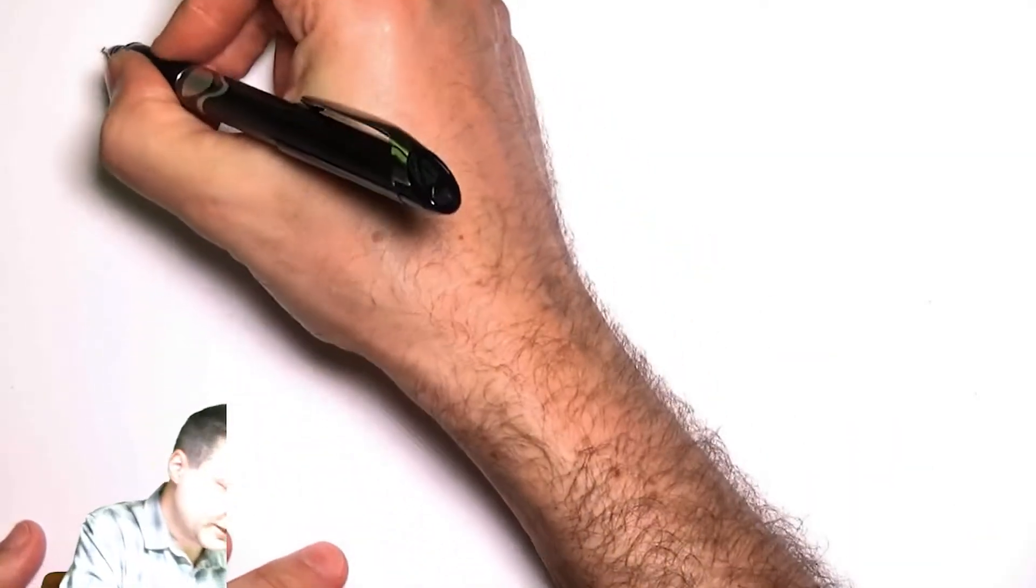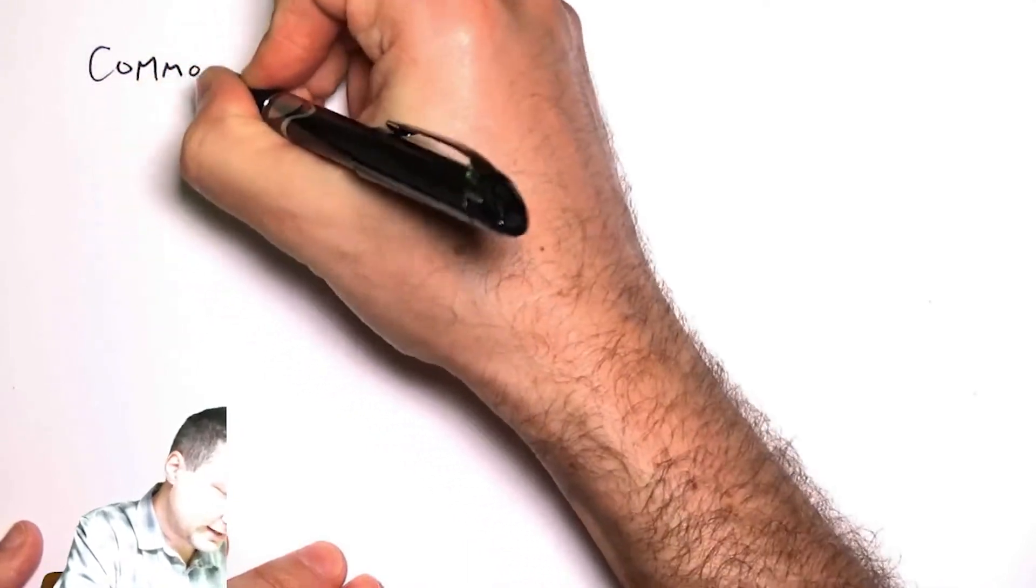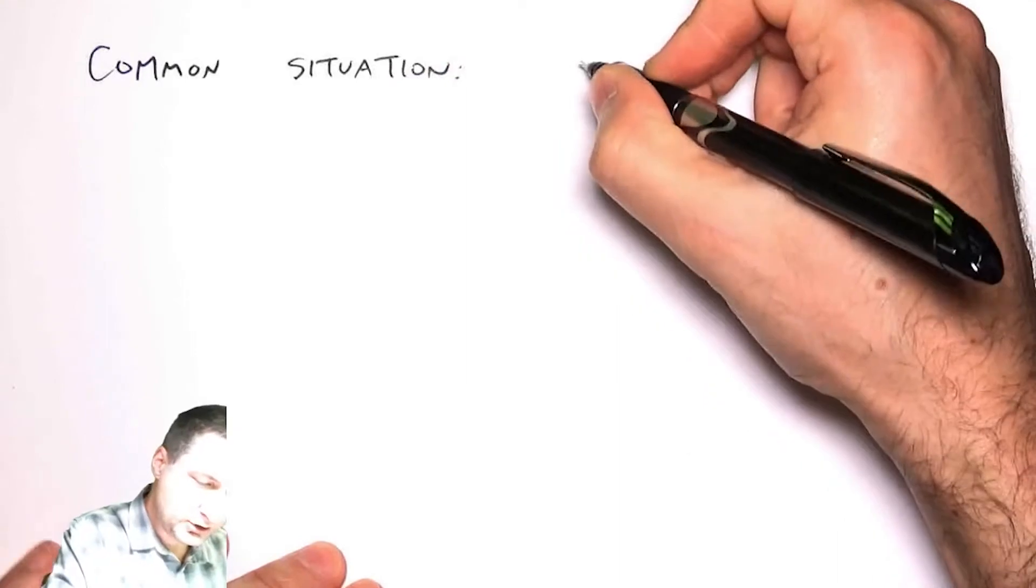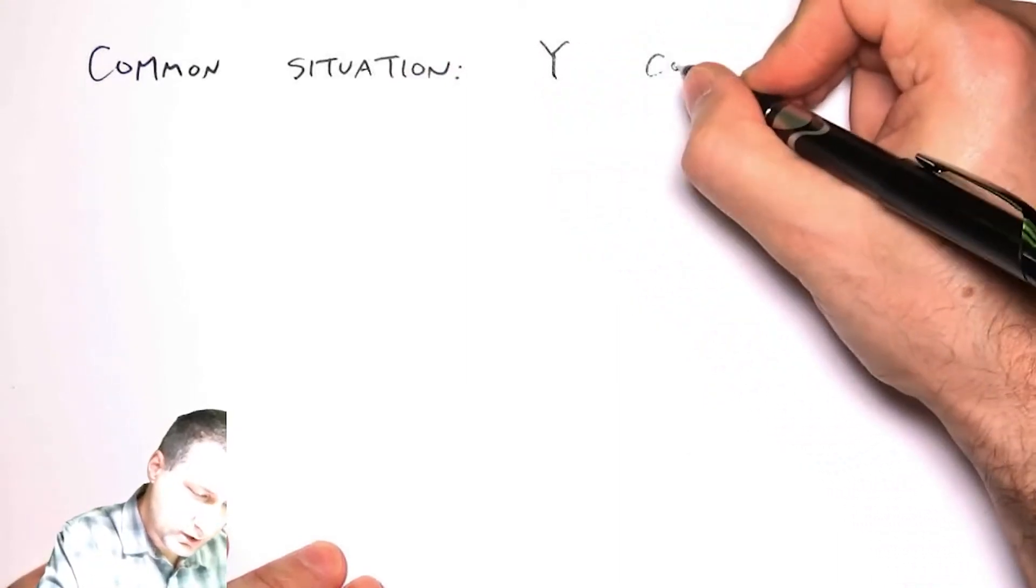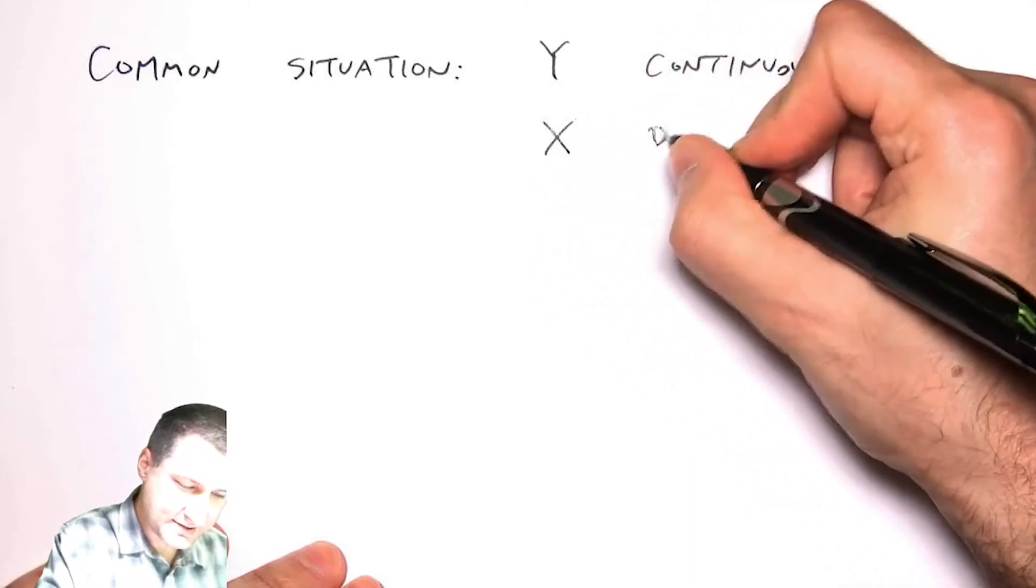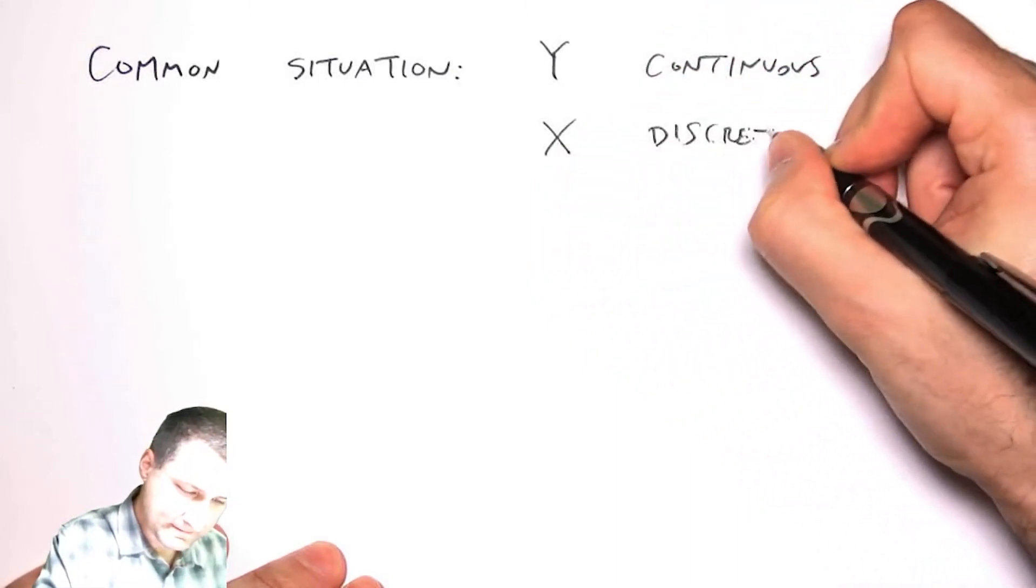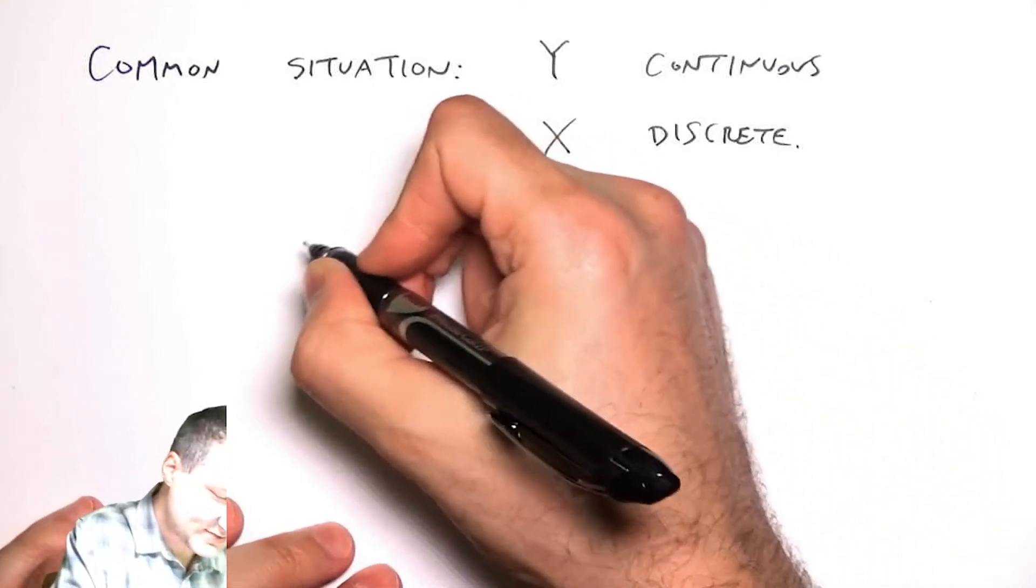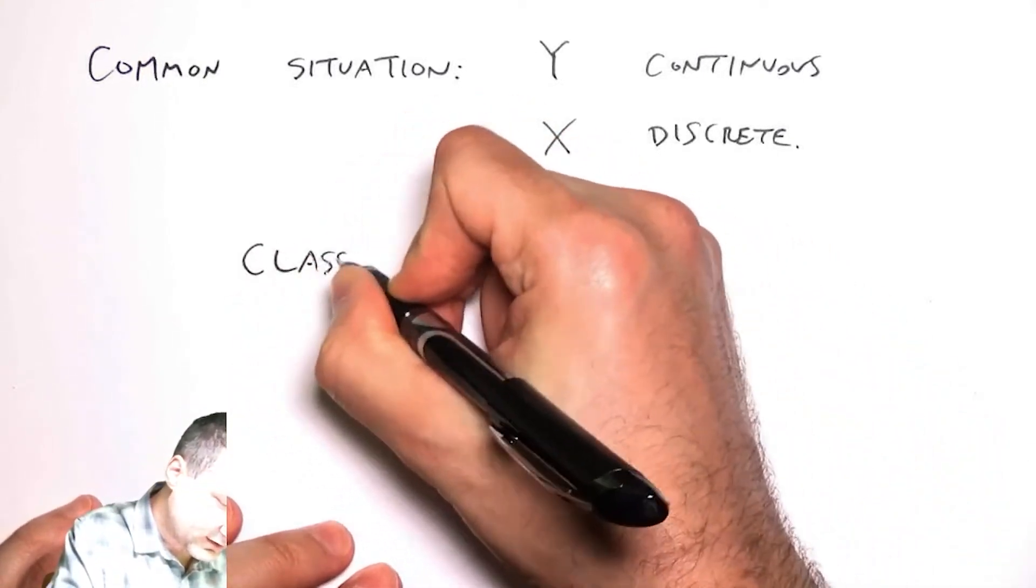A very common situation in machine learning and pattern recognition is that you have a continuous random variable that depends on a discrete random variable. So x, for example, is one of a set of discrete classes, whereas y is a continuous number that depends on what class I'm in. In that case, what I have is what I would call a class conditional PDF.